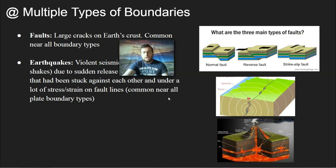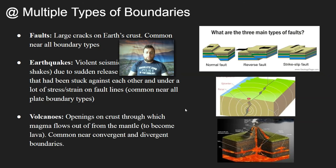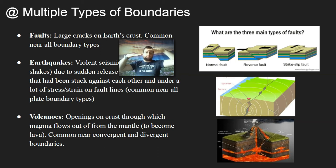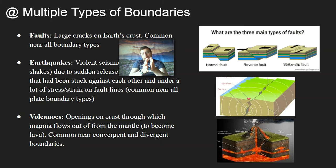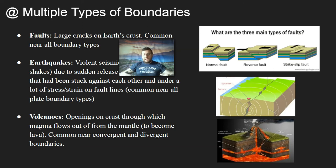Then you have volcanoes. At transform boundaries you're not going to see volcanoes, but at convergent and divergent boundaries there will be volcanoes. At a convergent boundary, a plate sinks underneath the other, melts, and the molten rock pushes through the other plate causing a volcano. At a divergent boundary, as the plates split apart, magma seeps through the crack and fills the gap, also causing volcanoes. In general, a volcano is an opening in the crust through which magma — molten rock — can flow and become lava as it reaches the surface.